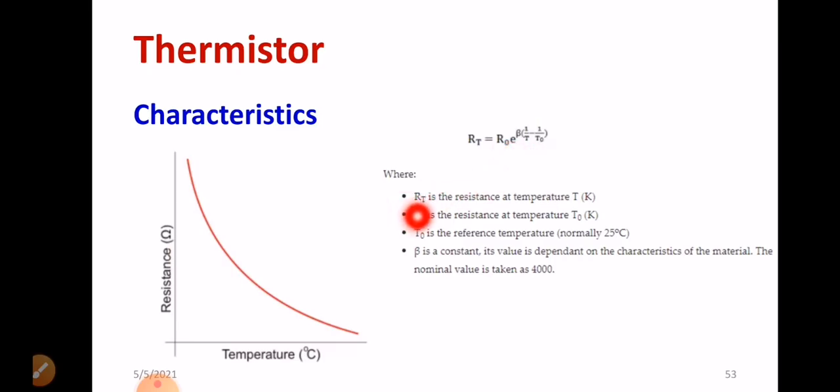What is RT? RT is the resistance at temperature in Kelvin. What is R0? Resistance at zero temperature. T0 is nothing but reference temperature, normally we consider 25 degree Celsius. If you want you can convert to Kelvin also, 25 degree Celsius plus 273. Beta is a constant. Its value is depending on the characteristics of the material. Beta will be directly depending on what type of material you are going to employ. I have given the checklist of material which will be used in the thermistor. The normal value is taken as 4000. That is the peculiarity.